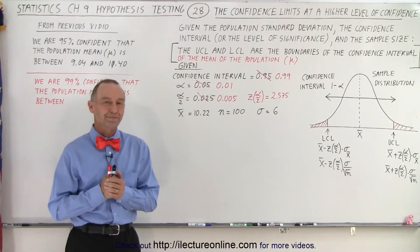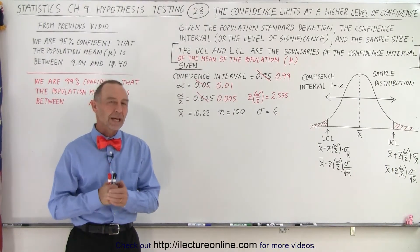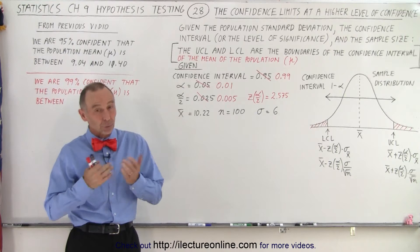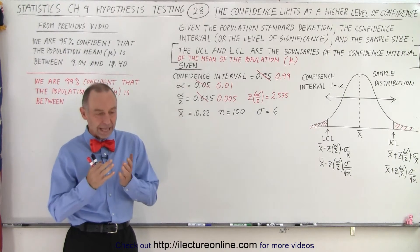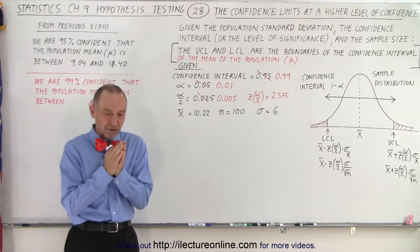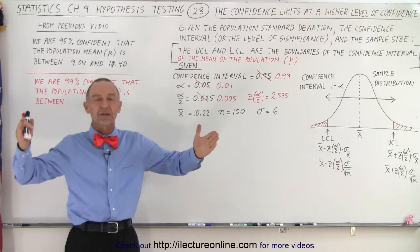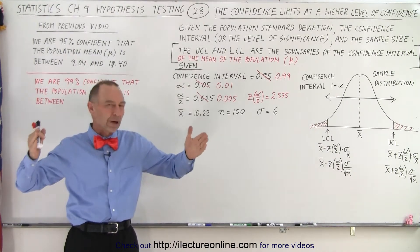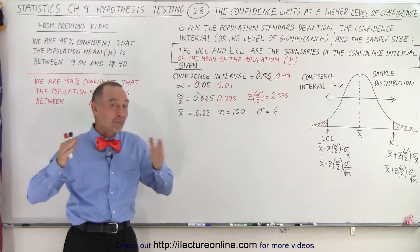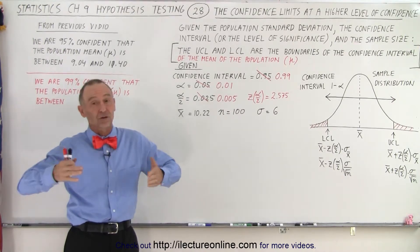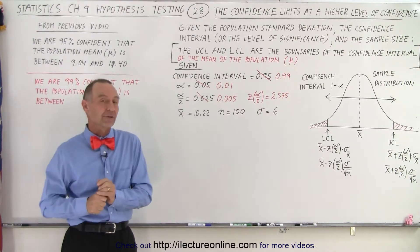Welcome to our lecture online. The upper confidence limit and the lower confidence limit give us the range — the boundaries of where we think the mean of the population could be at a certain level of confidence.